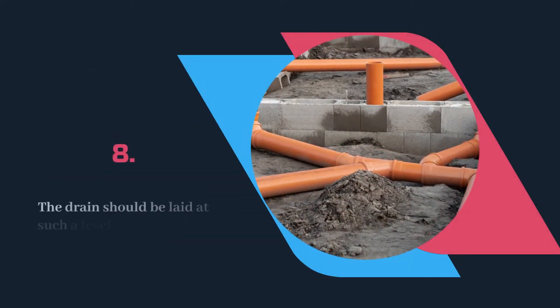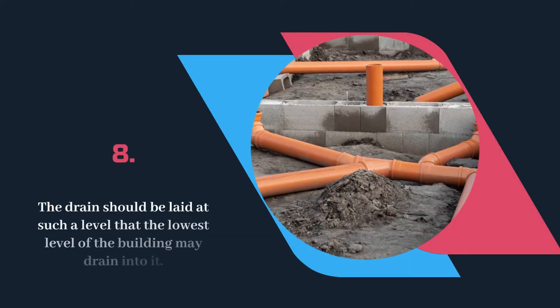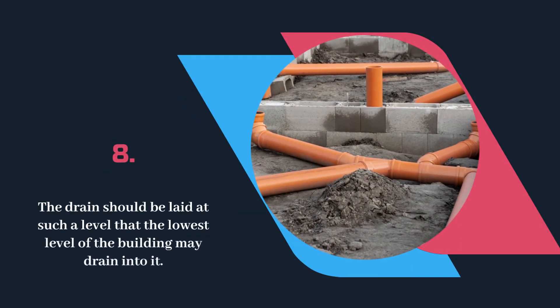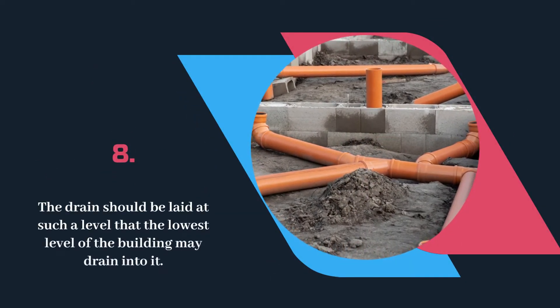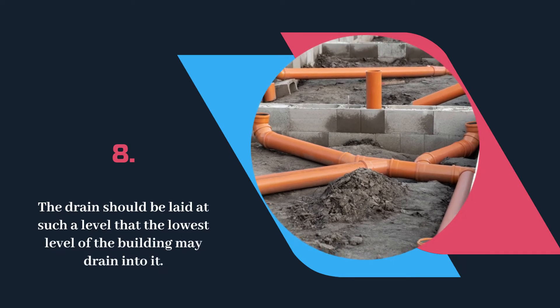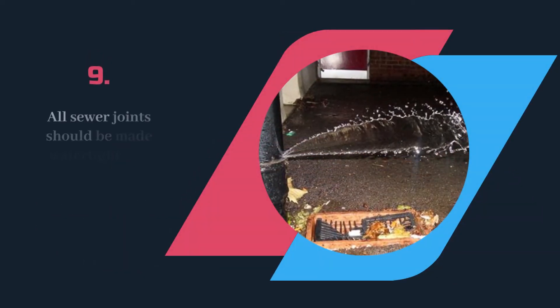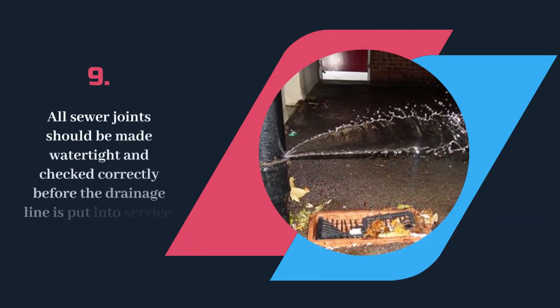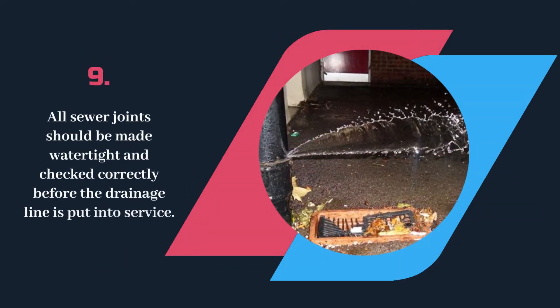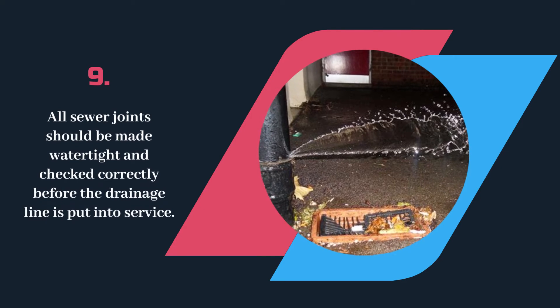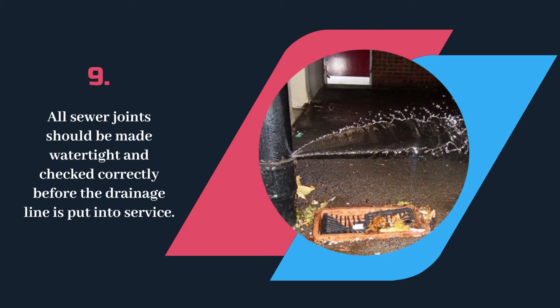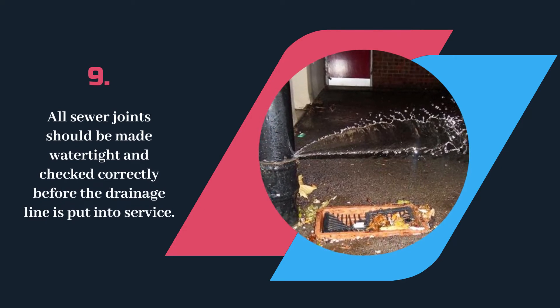The drain should be laid at such a level that the lowest level of the building may drain into it. All sewer joints should be made watertight and checked correctly before the drainage line is put into service.